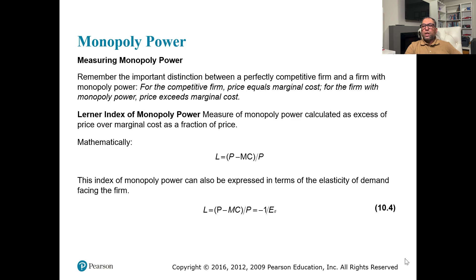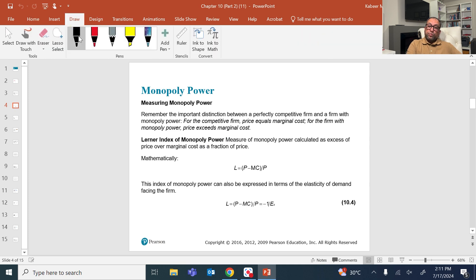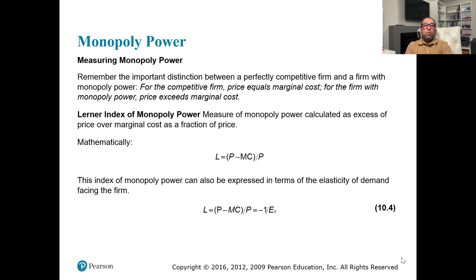Remember the important distinction between a perfectly competitive firm and a firm with monopoly power: for a competitive firm, price equals marginal cost; for the firm with monopoly power, price exceeds marginal cost. How much price exceeds marginal cost measures their power. The Lerner Index of monopoly power was developed to measure this, calculated as the excess of price over marginal cost as a fraction of price: (P - MC) / P.